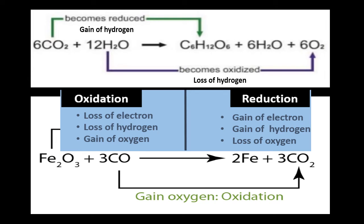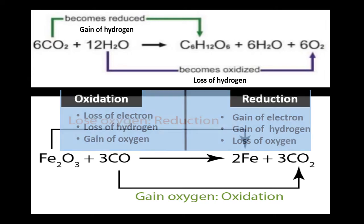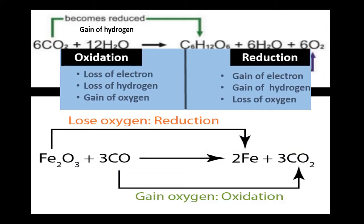In another reaction, ferric oxide loses oxygen — loss of oxygen means reduction. On the other side, carbon dioxide is formed by gaining oxygen — addition of oxygen means oxidation. So this demonstrates both oxidation and reduction occurring simultaneously.